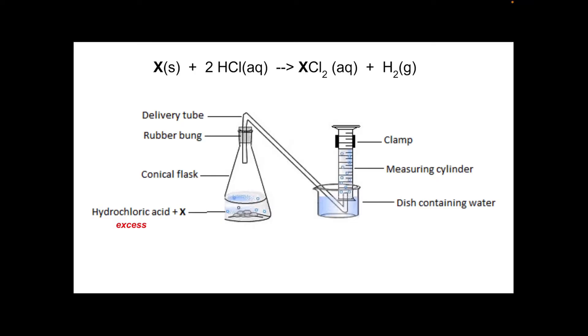The water will be displaced and replaced with hydrogen. Then we're going to use the volume of hydrogen produced to calculate the moles of hydrogen and hence the moles of X used in the reaction, and from that we can get the MR of X.